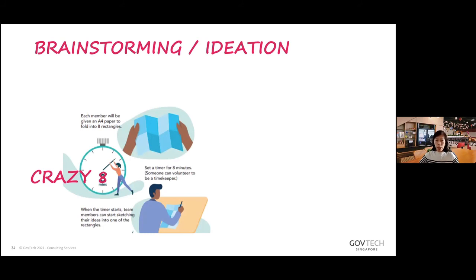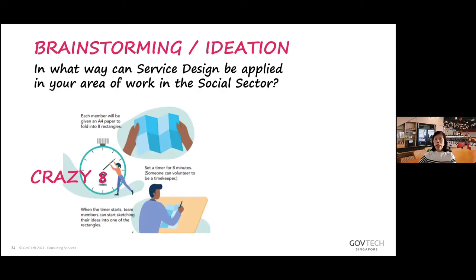Crazy Eight is where you fold your paper into eight sections and draw all the ideas you have within eight minutes. This is something you can do with your own groups whenever you're doing your own service design. For today, I'm going to start the Menti again — type in what are some of the possible ideas where you can apply service design in your area of work in the social sector.